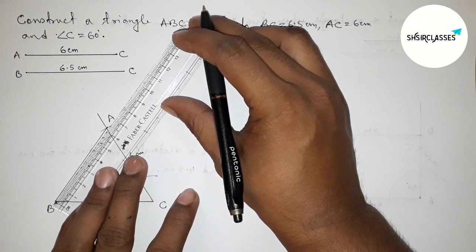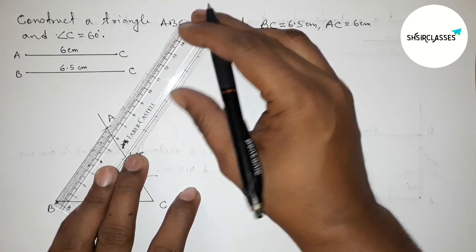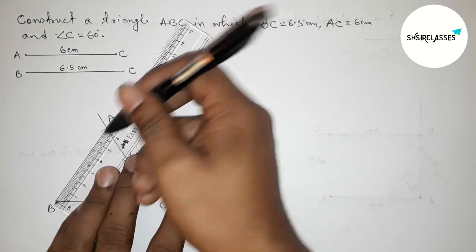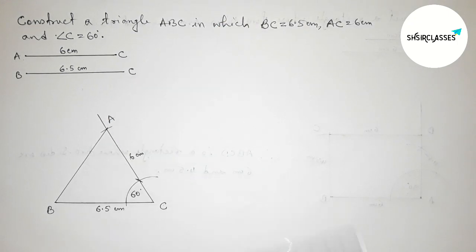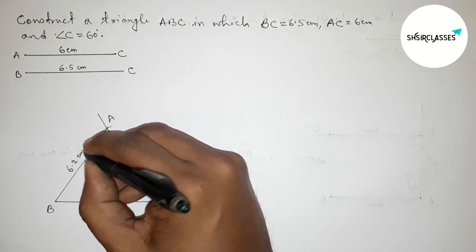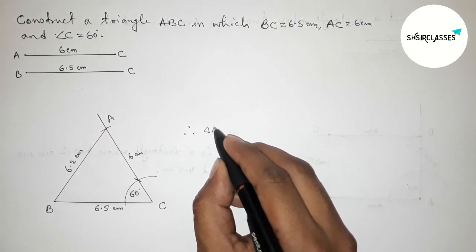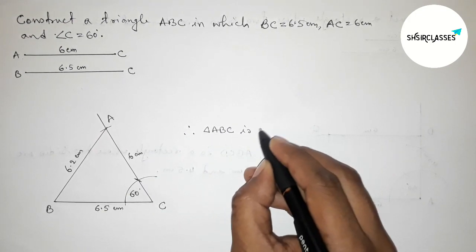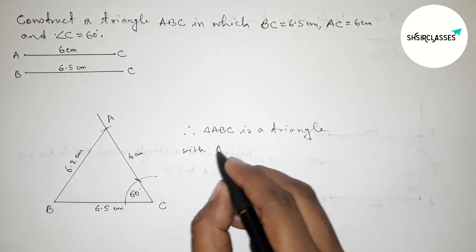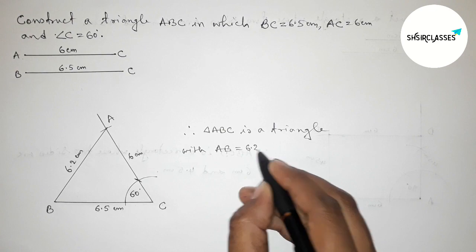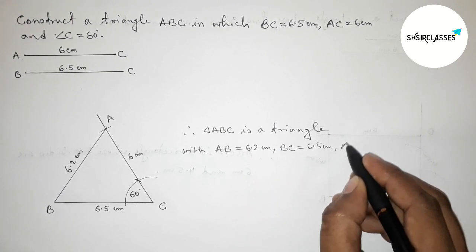Now measuring the length of the side AB with the help of scale. So this is approximately 6.2 centimeters. So AB equals 6.2 centimeters. Therefore, triangle ABC is a triangle with the side AB equals 6.2 centimeters, BC equals 6.5 centimeters, AC equals 6 centimeters.